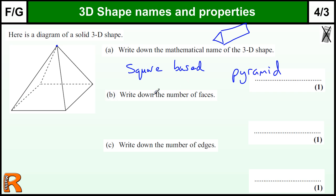Write down the number of faces, so that's essentially the number of sides. So you've got one, two, three, four on the top, and one on the bottom. So that's five faces.